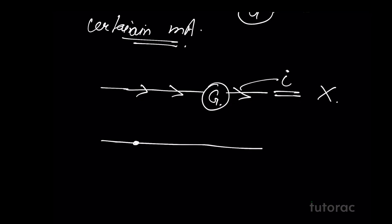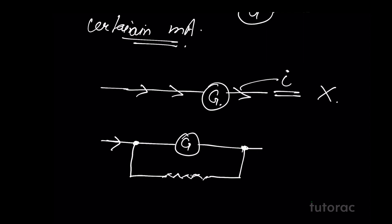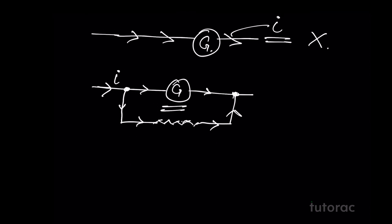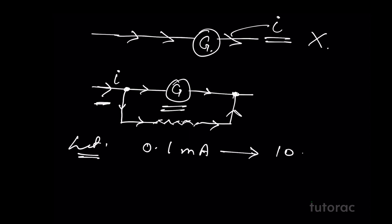How can we reduce the current flowing through this wire? By attaching a low resistance wire parallel to it. I am attaching a very low resistance wire parallel to it. Now, most of the current coming in will flow through this low resistance wire, and only a little amount of current will go into the galvanometer. Thus, the galvanometer is actually measuring a very low current. To know the actual value of the current, we can simply create a scale — for example, 0.1 milliampere measured by the galvanometer corresponds to 10 ampere, or 5 milliampere measured by galvanometer is 10 ampere. We can make any type of these scales.